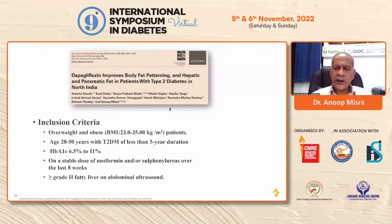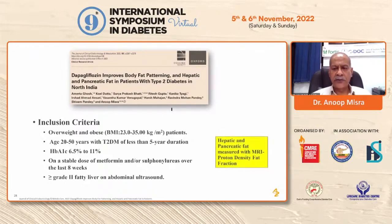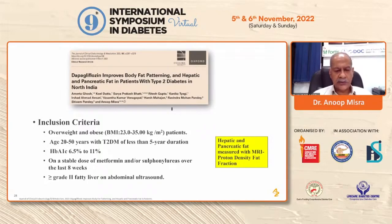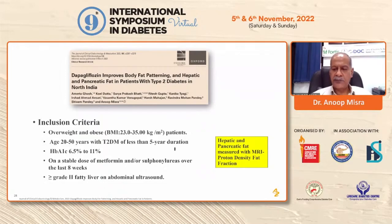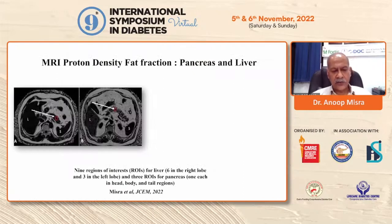Regarding SGLT2 inhibitors: hardly anybody in the world has tried to reduce pancreatic fat using an SGLT2 inhibitor. Our study, published in the Journal of Clinical Endocrinology and Metabolism in April, took overweight patients aged 20 to 50 years with uncontrolled diabetes on stable doses of metformin and sulfonylureas for eight weeks, with ultrasound grade 2 fatty liver. We measured hepatic and pancreatic fat using MRI proton density fat fraction, with nine voxels in the liver and three voxels in the pancreas.